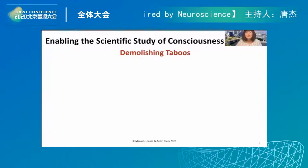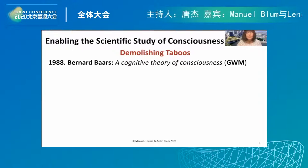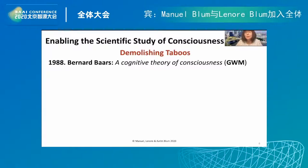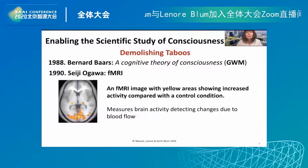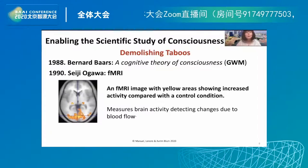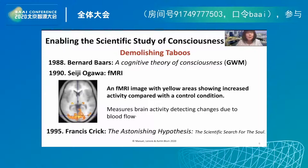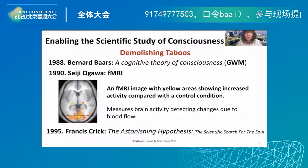The scientific study of consciousness was essentially taboo or out of bounds for any respectable scientist until about 30 years ago. In 1988, cognitive neuroscientist Bernard Baars published his work on a cognitive theory of consciousness, the global workspace model. In 1990, with the advent of fMRI imaging technology, cognitive neuroscientists were able to non-invasively look at the brain while people were doing cognitive activities. Then in 1995, Nobel laureate Francis Crick wrote a book called 'The Astonishing Hypothesis,' where he talks about neural correlates of consciousness.